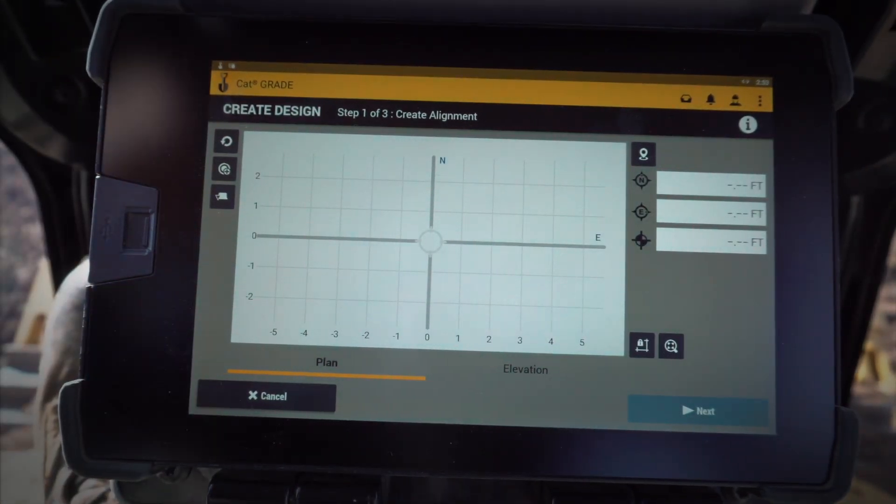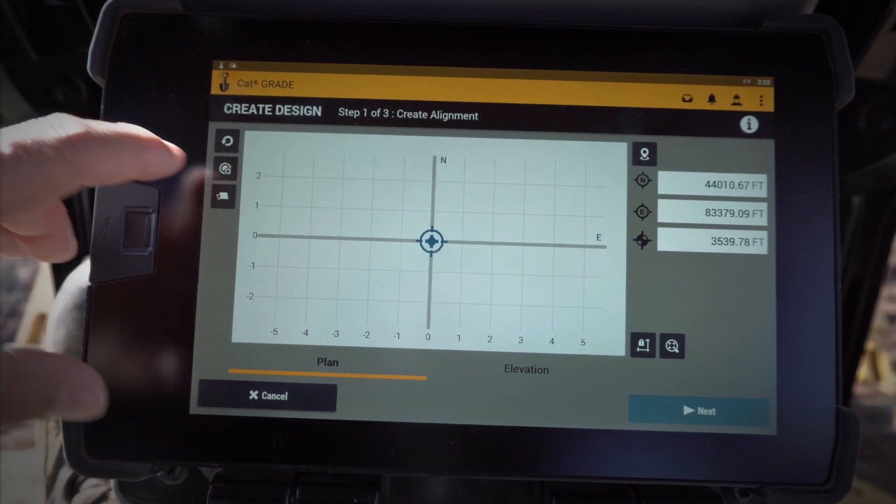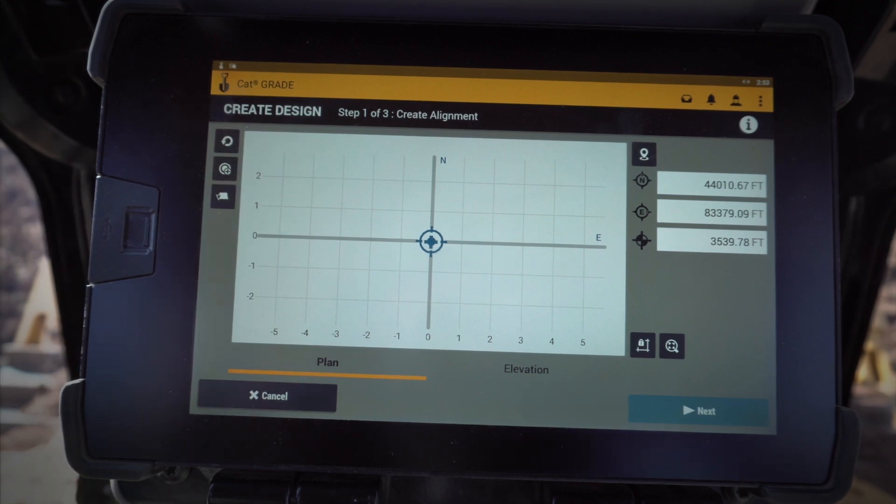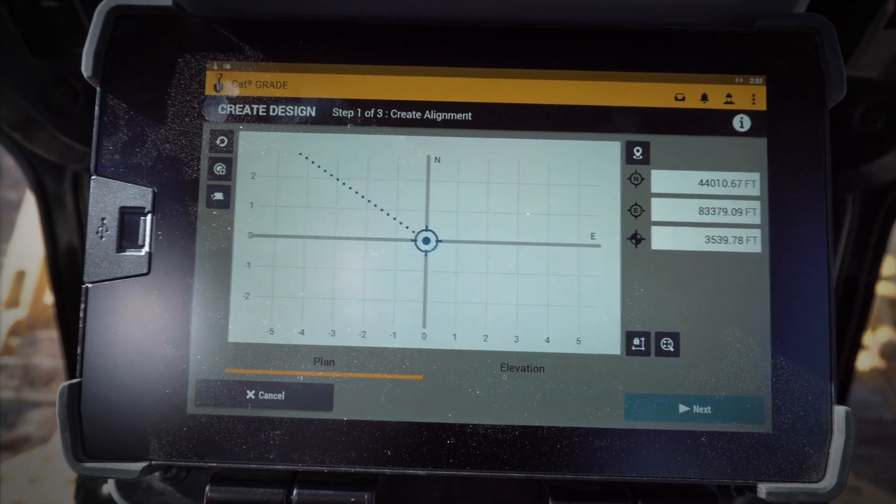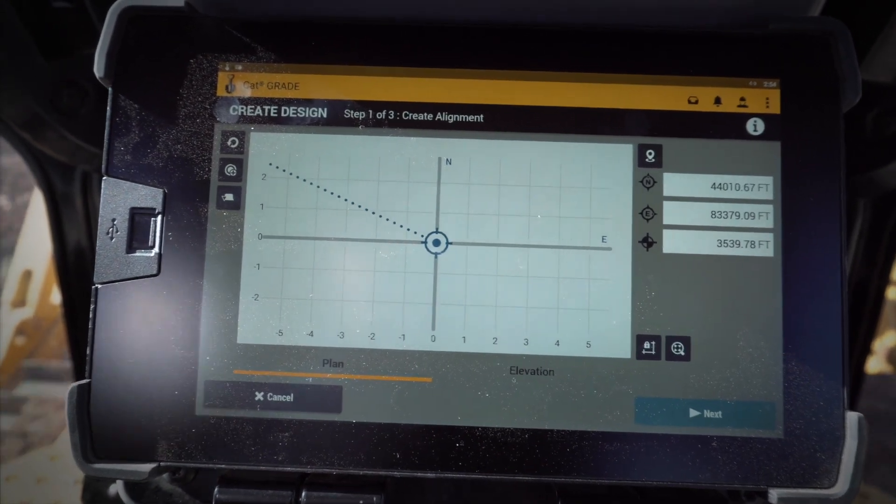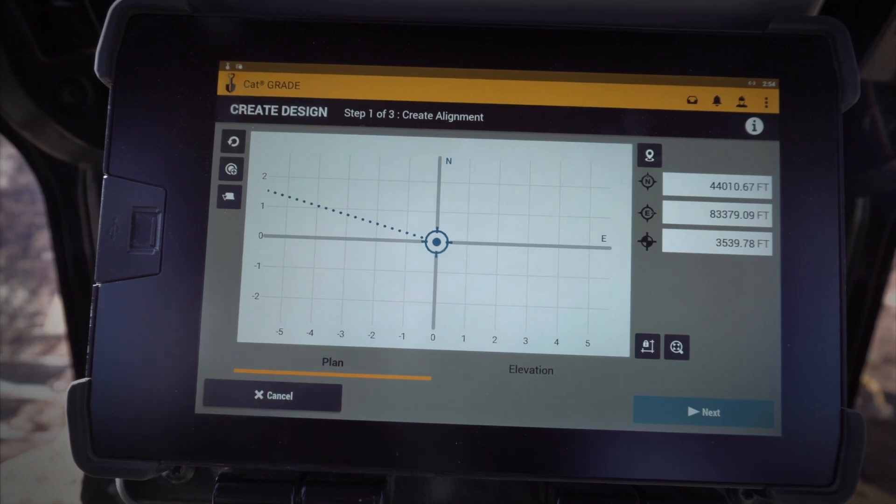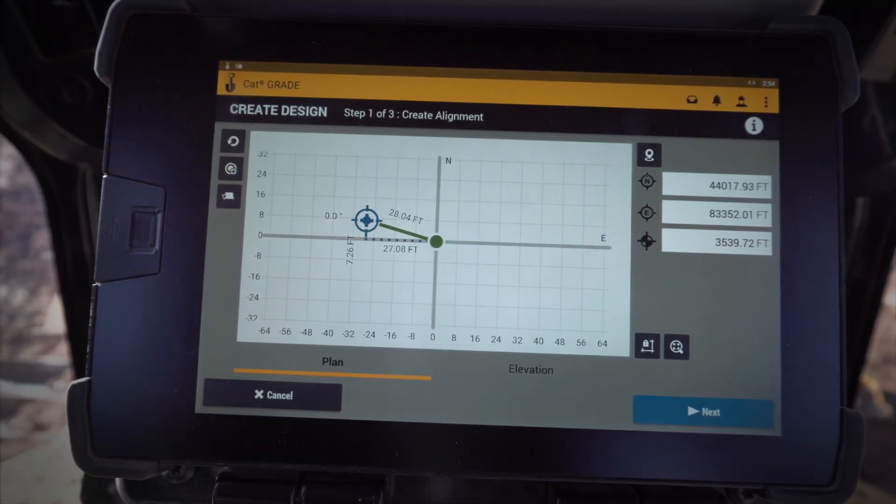So I'm going to go ahead and create a point based on my left blade tip right there. And if I wanted to I could drive along and create another point as well. Let's do that real quick. Now by driving and creating a second point with my blade tip, I've got my two-point design.